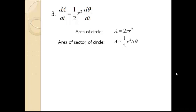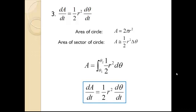In the third step, we need to show that dA/dt, which is the rate of the area swept by the planet, equals half r squared dθ/dt. We know that the area of a circle involves r squared. We can then use this equation to approximate the area of a sector of a circle, which is half r squared Δθ. So using the area of a sector of a circle, we first integrate with respect to θ, and then we differentiate both sides with respect to time. This brings us to the equation dA/dt, which equals half r squared dθ/dt.